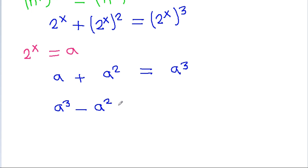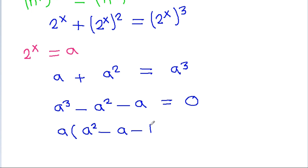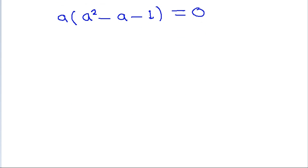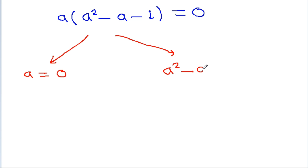Rearranging, we get a cubed minus a squared minus a equals 0. Taking a as common factor, we get a times (a squared minus a minus 1) equals 0.